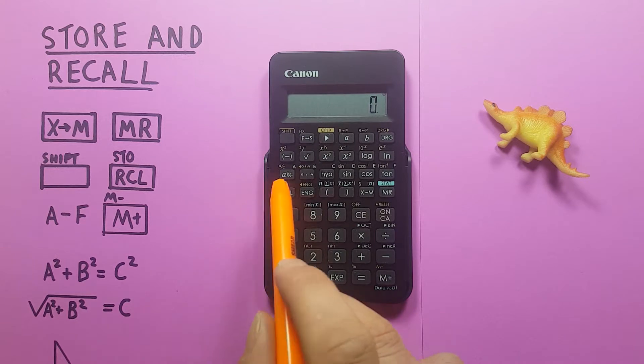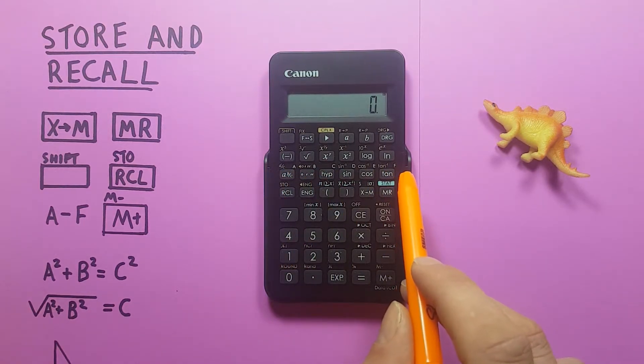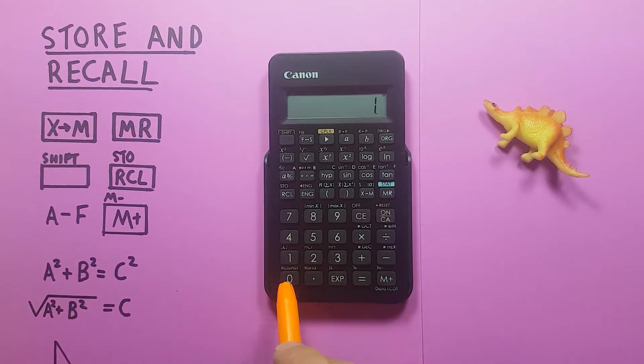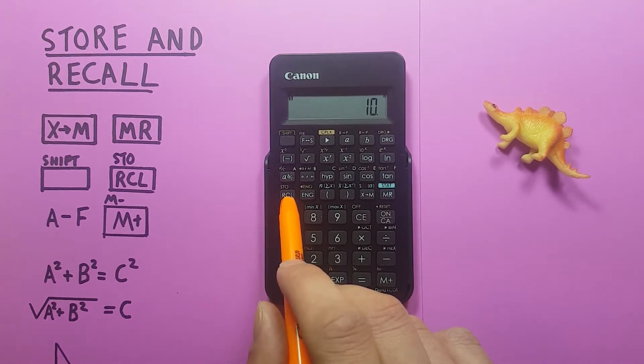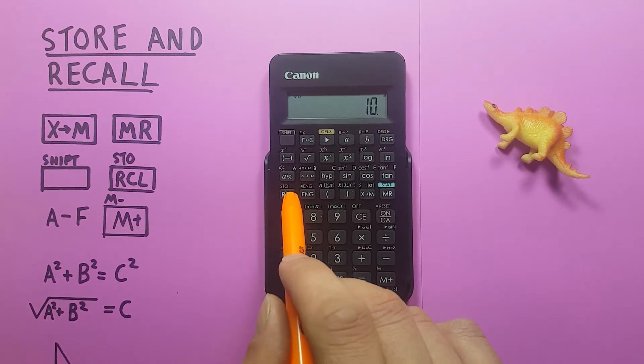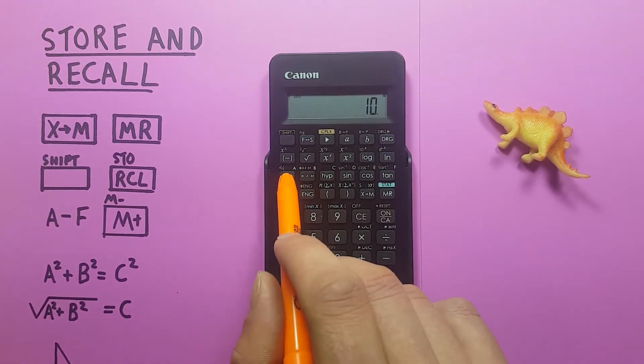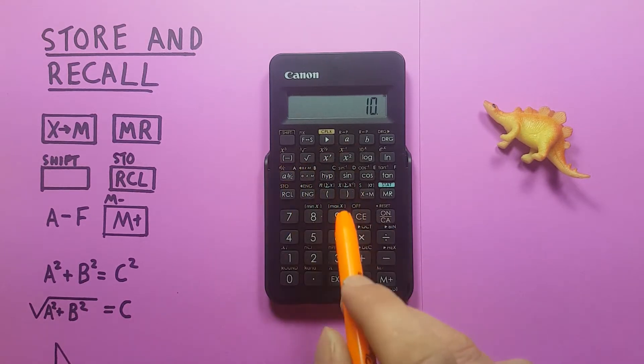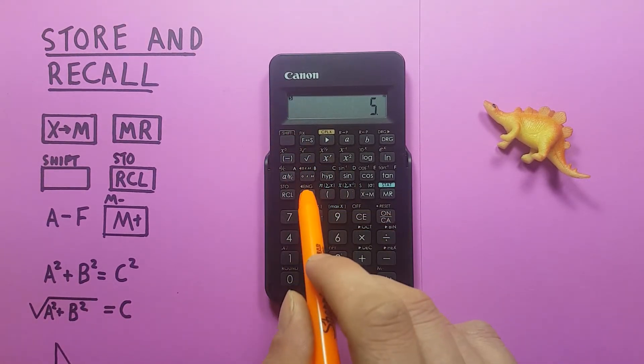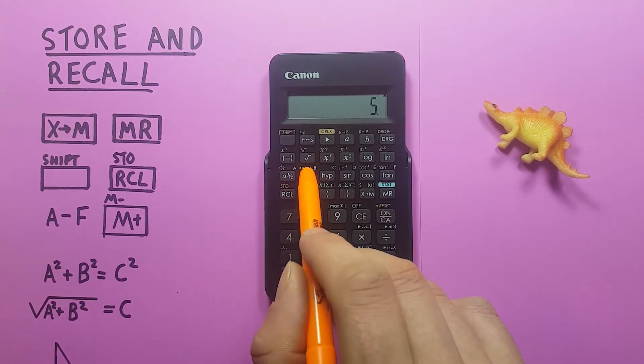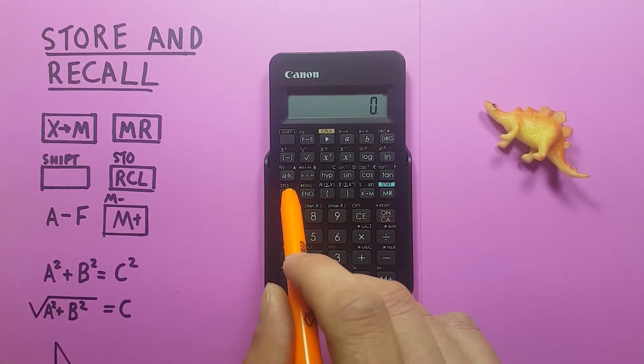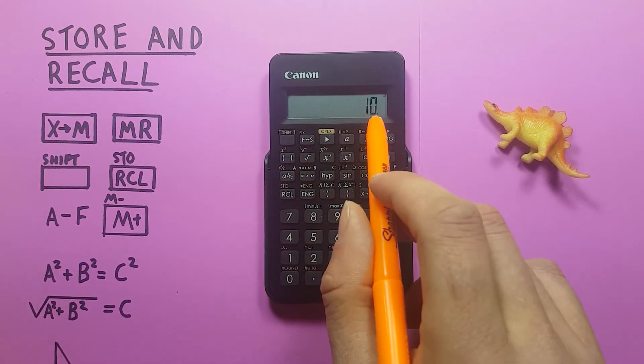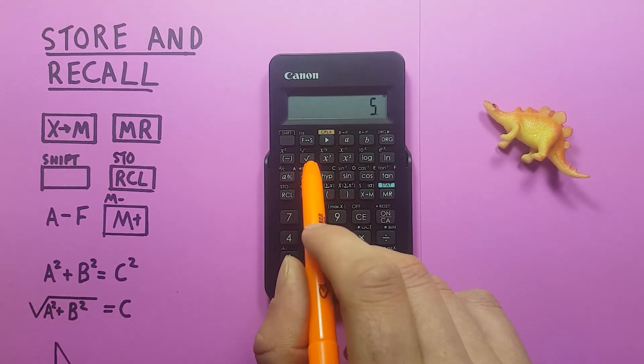We also have these six variable slots A through F. If we want to store something in them we would place that number on the screen. We'll say 10 and then press shift and then the RCL key with the shift function of STO which stands for store. Store and then we would choose which slot we want to put this in. So we'll put this in A and let's put 5 shift store B. If we clear the screen and then want to recall these numbers we just press the RCL key A, there you see is our 10. RCL B, there's our 5.